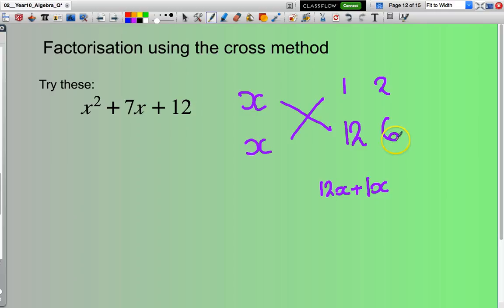Well let's have a look. This time 6 times x is 6x, 2 times x plus 2x. 6x plus 2x is 8x. Does 8x equal 7x? No it doesn't, but it's getting closer. Next factor: 3 and 4.